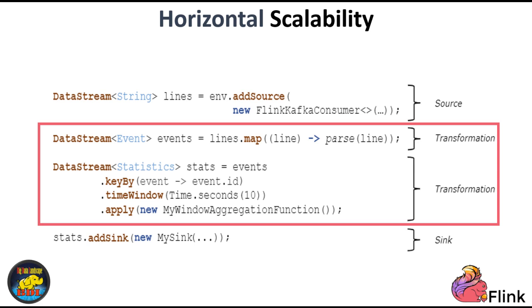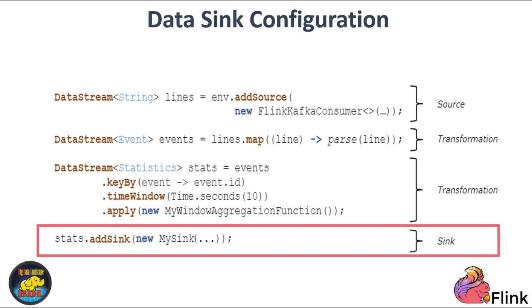Flink is built for scalability, and one technique it employs is key-based partitioning. You can instruct Flink to partition the data stream based on specific keys. For instance, if each event has a unique ID, Flink can extract this ID and use it to calculate a hash code, which determines which parallel Flink nodes will process the event. As a result, the incoming stream is efficiently distributed among the available servers in the cluster. After applying transformations, you define one or more sinks to determine what happens to the results. For instance, you can write the processed data to a database, or continue treating it as a stream and write all updates to a message broker for further downstream processing.